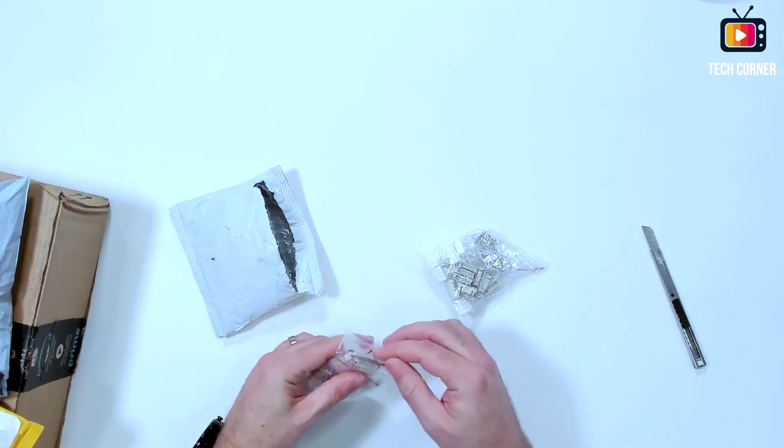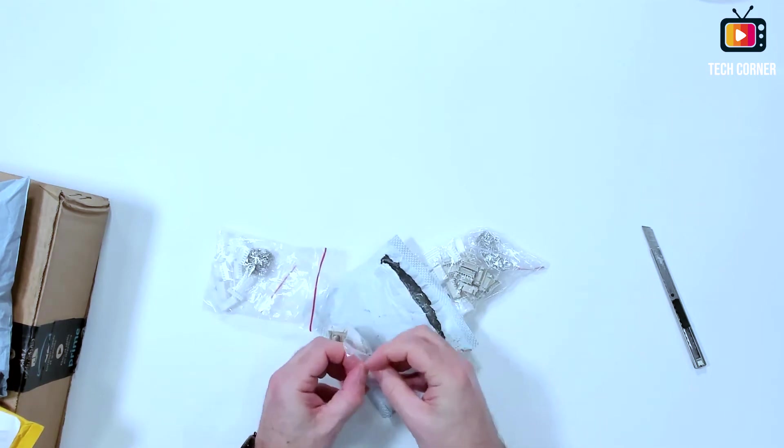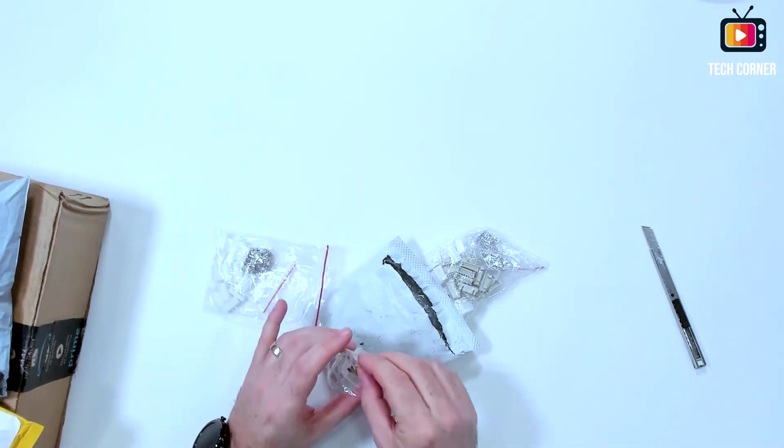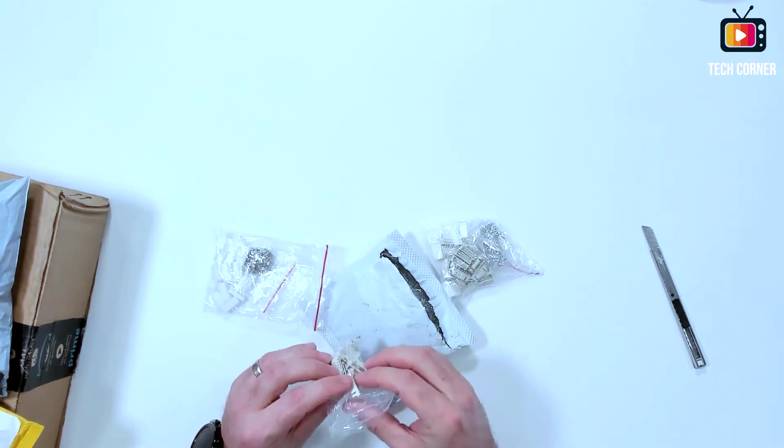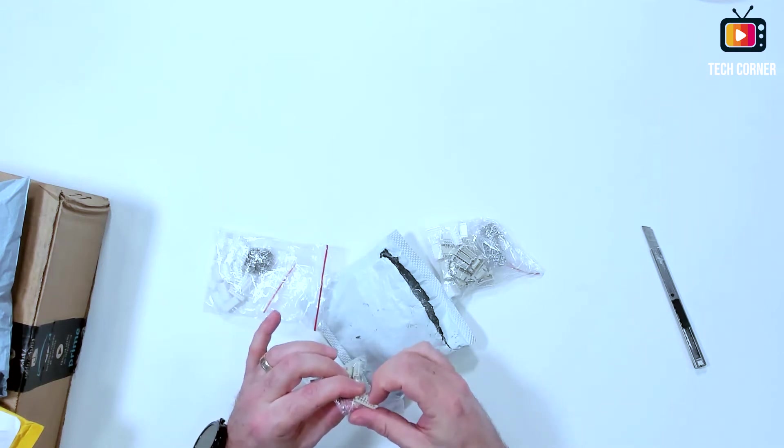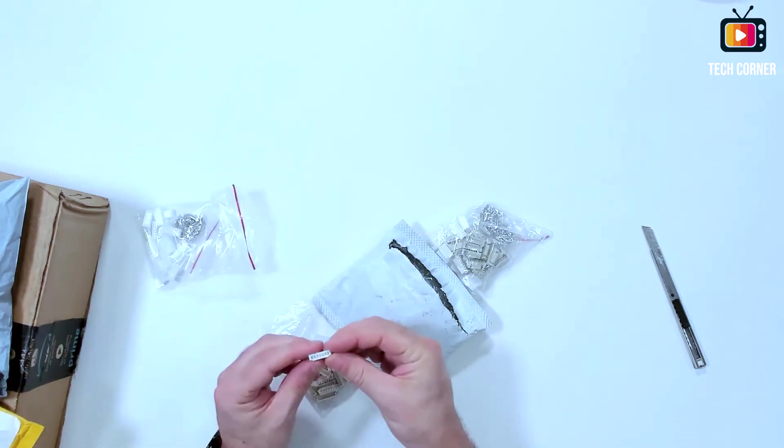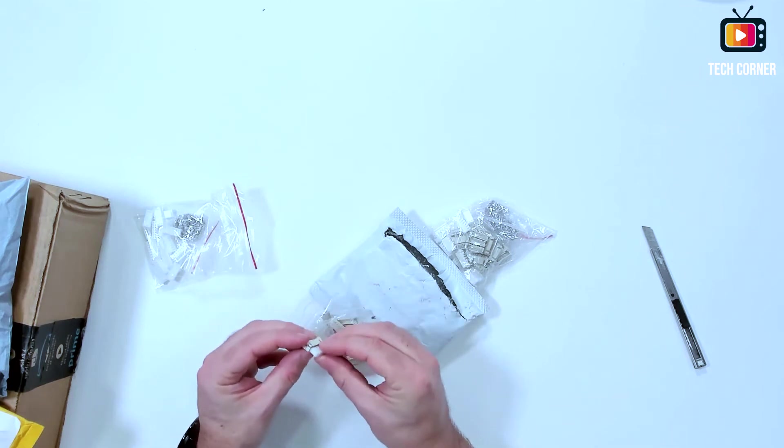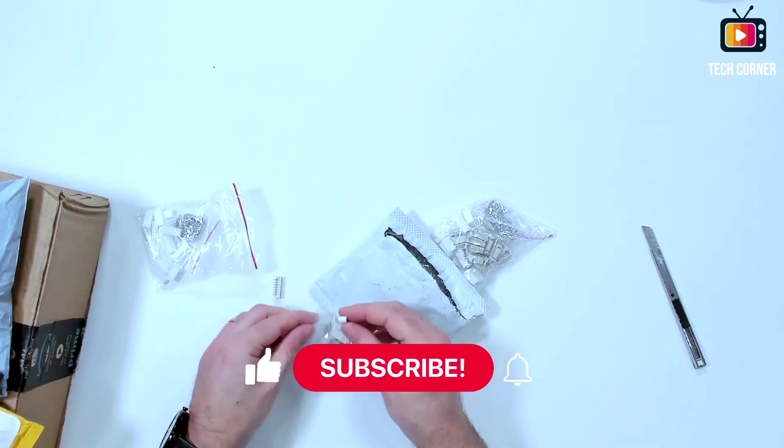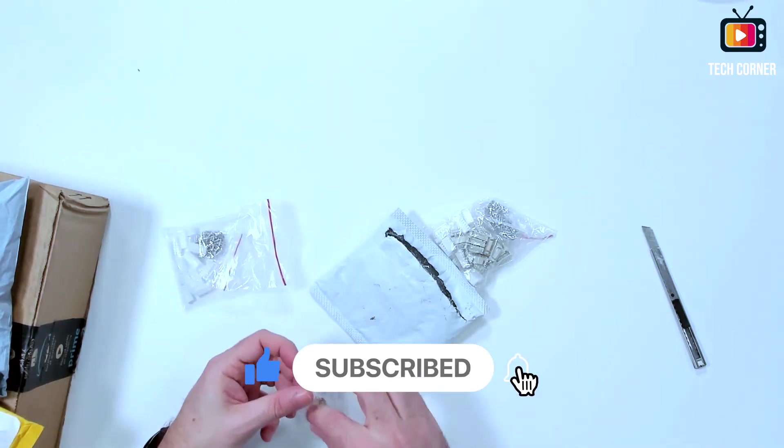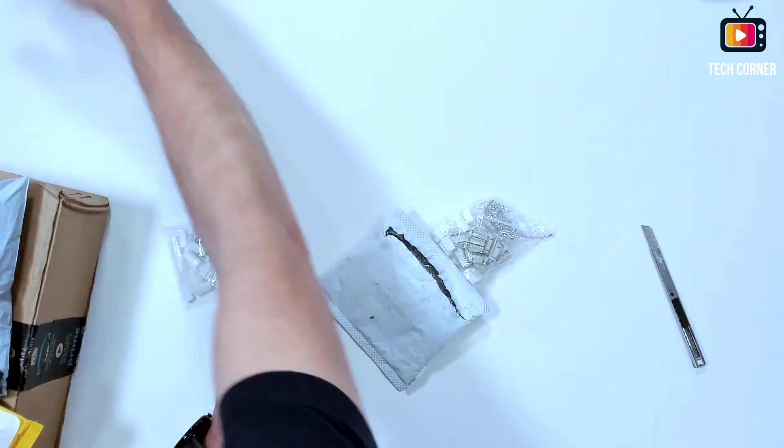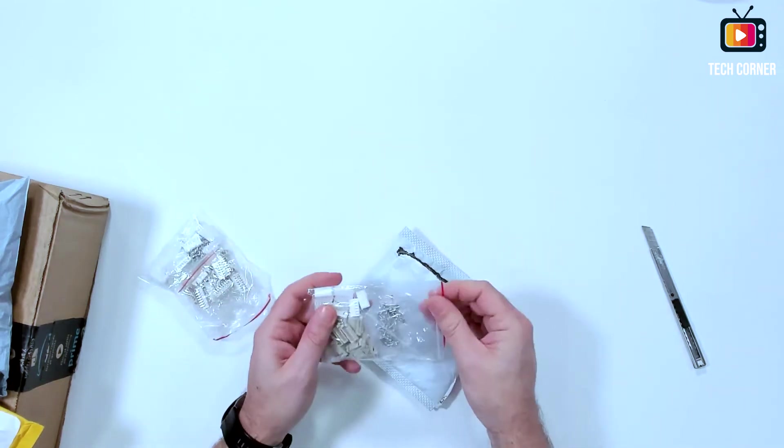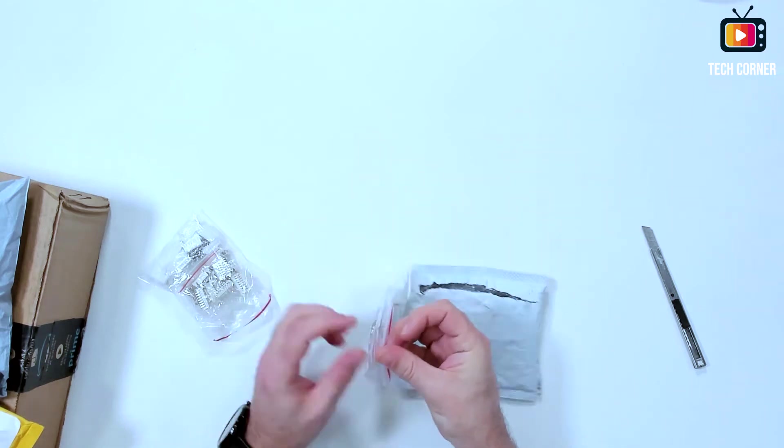So this is six pin connectors. You can put them on the motherboard. Those are seven pins. You have here the female part and the male part with the pin to connect. Something like this. And this one is the six pins version. Same thing, nothing different.